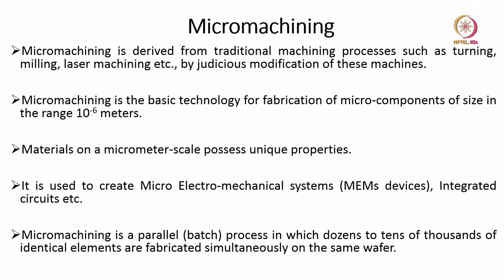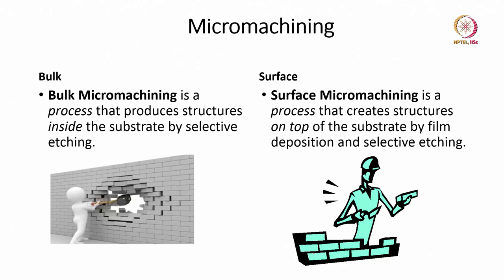As you can see on the slide, micromachining is traditional — turning, milling, laser machining — at 10^-6 meters, with unique properties for MEMS-based devices. Dozens to tens of thousands of elements are fabricated, and the two key types are bulk micromachining and surface micromachining.